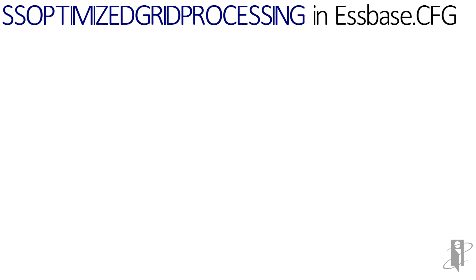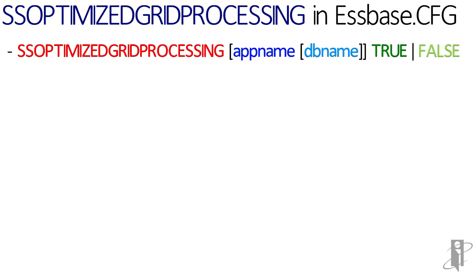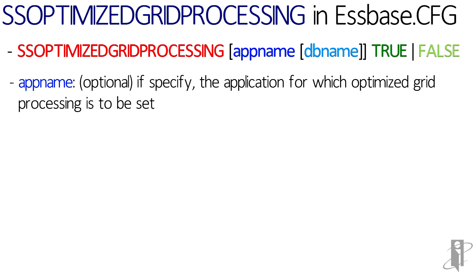Here, we would go over the syntax for the setting. App name is optional. It specifies the application for which optimized grid processing is to be set. If you specify a value for app name and do not specify a value for db name, the setting applies to all databases in the specified application. To enable the setting for a specific database, you must specify an application and database. If you do not specify an application, you cannot specify a database, and the setting applies to all applications and databases on the S-Space server.